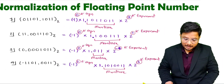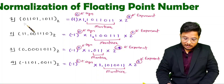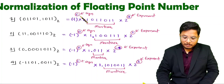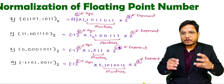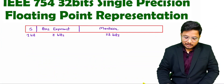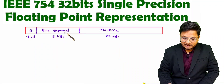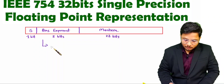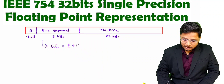If you have seen my previous video, I explained how to normalize a floating point number. To normalize, you write: minus 1 to the power of something representing the sign, then 1 point something representing the mantissa, and into 2 to the power of something representing the exponent. Based on that normalization, this format is defined. The first bit represents the sign, and the bias exponent B is calculated as exponent plus 127.